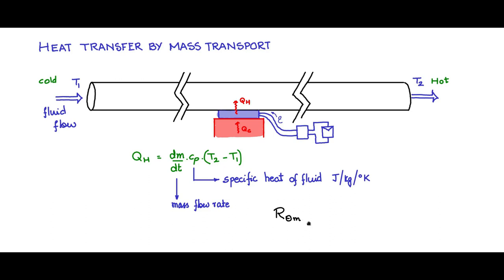R theta m, the thermal resistance for the mass flow rate, if you look at this Q which is equal to delta T by thermal resistance, you can say it is 1 by this value.